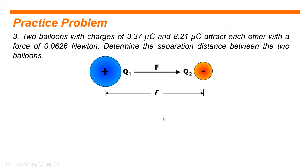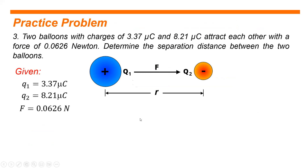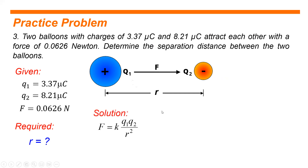Practice problem number three. Two balloons with charges of 3.37 microcoulombs and 8.21 microcoulombs attract each other with a force of 0.0626 newtons. Determine the separation distance between the two balloons. Given: q₁ equals 3.37 microcoulombs, q₂ equals 8.21 microcoulombs, and force equals 0.0626 newtons. We are asked to find the separation distance. Using Coulomb's Law, we can derive that r squared equals k times q₁ times q₂ all over the force.